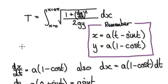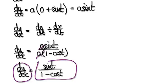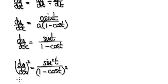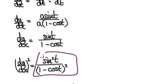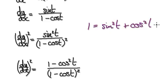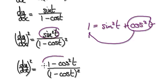Looking back at the original formula, we have dy by dx, but we need dy by dx squared, so we need to square this expression. Squaring it gives you this result. Now remember the identity: 1 equals sine squared t plus cos squared t. So rearranging, take away this, and that gives you sine squared t equals this.